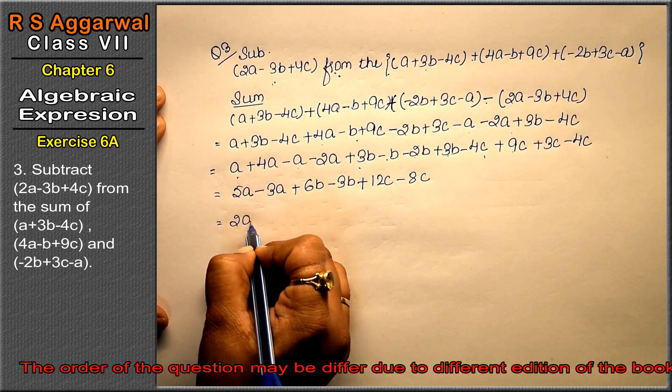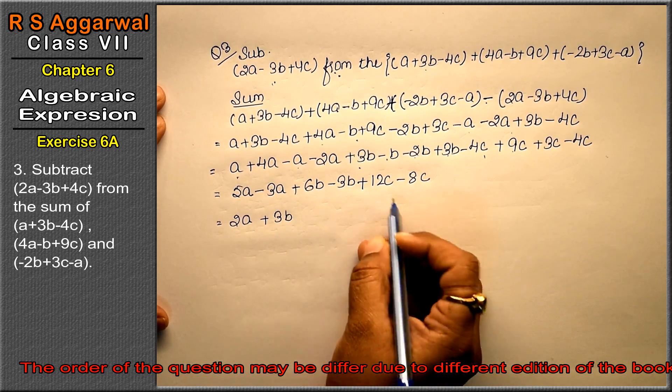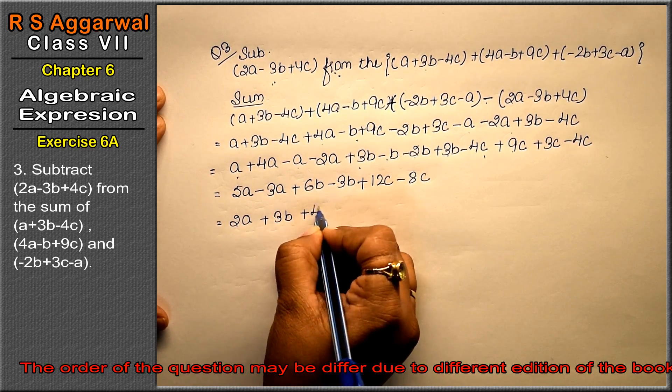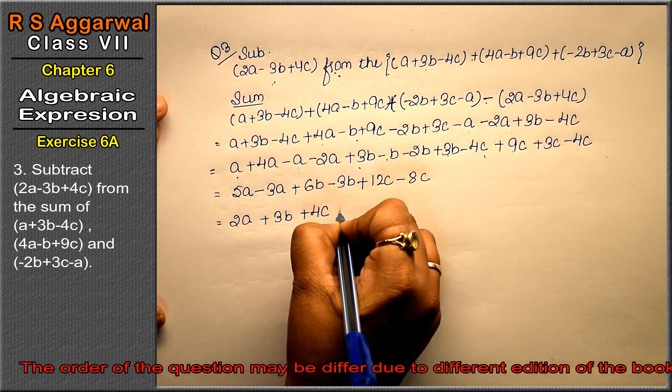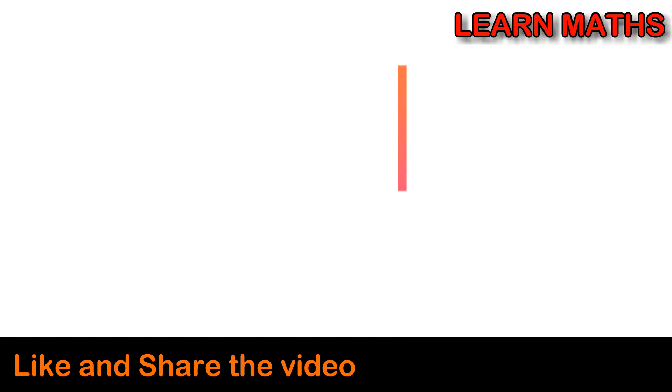The positive 2a plus 3b plus 4c, with opposite signs for the subtraction, is the answer.